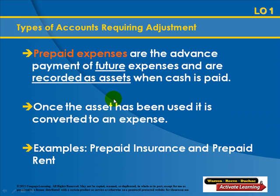The types of accounts requiring adjustment include prepaid expenses, which are advance payments of future expenses recorded as assets when cash is paid. Examples include prepaid rent and prepaid insurance. Once the asset has been used, it is converted to an expense.